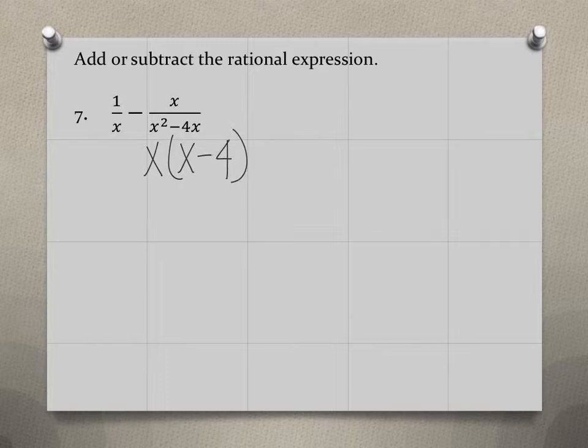So let's look at it this way. The first denominator is an x, and the second denominator is x times x minus 4. So we can use the least common denominator of x times x minus 4.